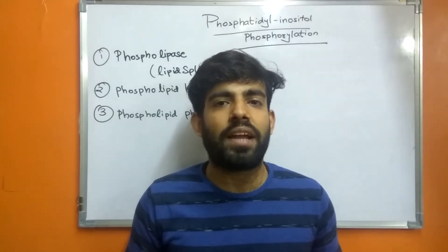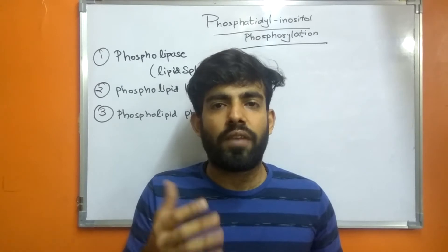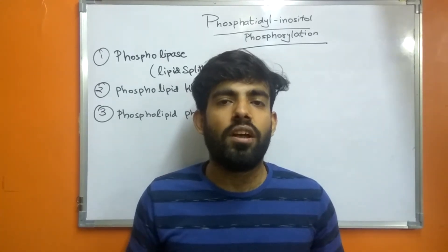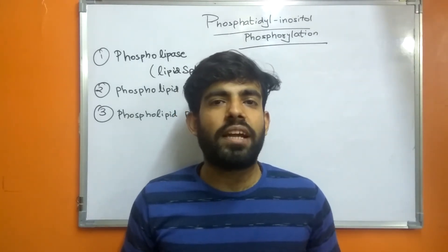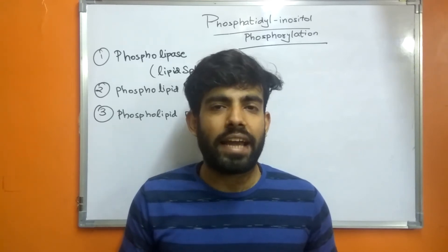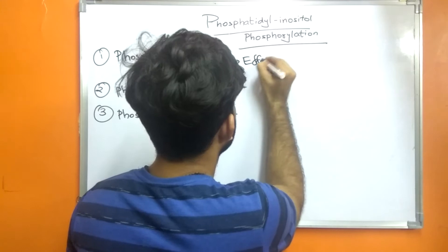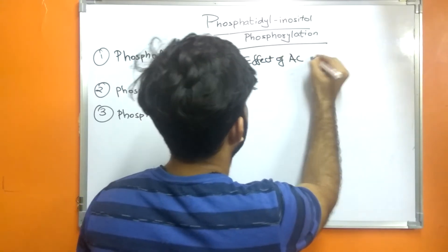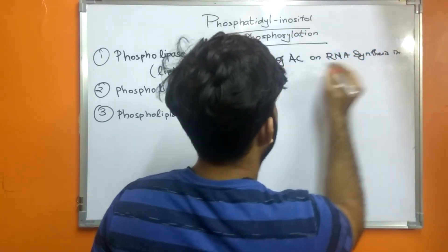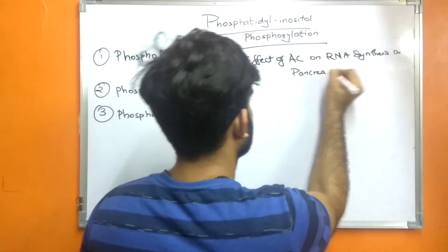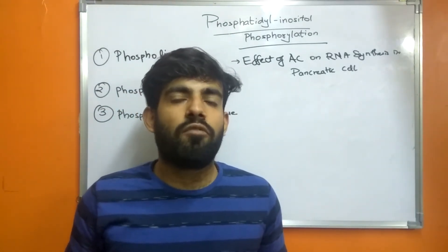Further, if we talk about the discovery of how these phospholipids were found to be involved in the signaling process, this was carried out by two scientists named Lovel and Mabel. These two scientists were working on the effects of acetylcholine on RNA synthesis in pancreatic cells. The aim was to study the effect of acetylcholine on RNA synthesis in pancreatic cells.